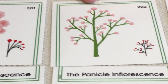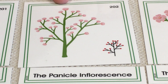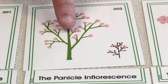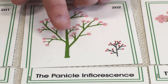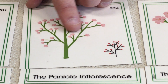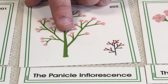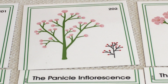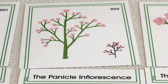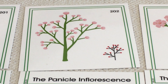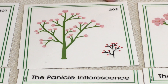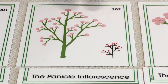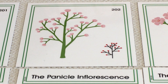Next, we have the panicle inflorescence. This one is arranged almost like the branches of a tree. One major peduncle right here, and then many pedicels. And even off those pedicels, you have smaller pedicels that are attached — looks like a branch of a tree, or the veins of the human body, or like roots spreading out. So the panicle inflorescence: one major peduncle, many pedicels, and each pedicel has its own bloom.